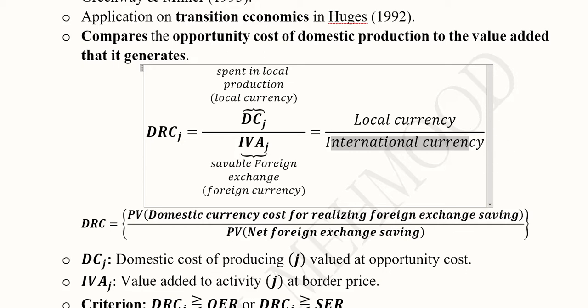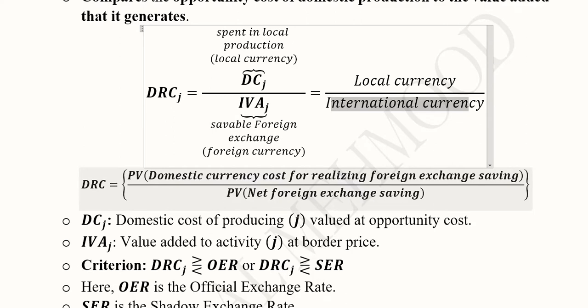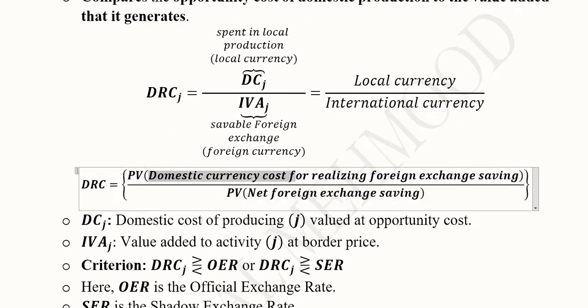So the numerator is in local currency and the denominator is in international currency. If the answer is 5, it means that in order to save 1 dollar we have to spend 5 local currency units — for example PKR, real, or yen. In other words we are finding the present value of domestic currency cost used to realize foreign exchange savings, divided by the present value of net foreign exchange savings.